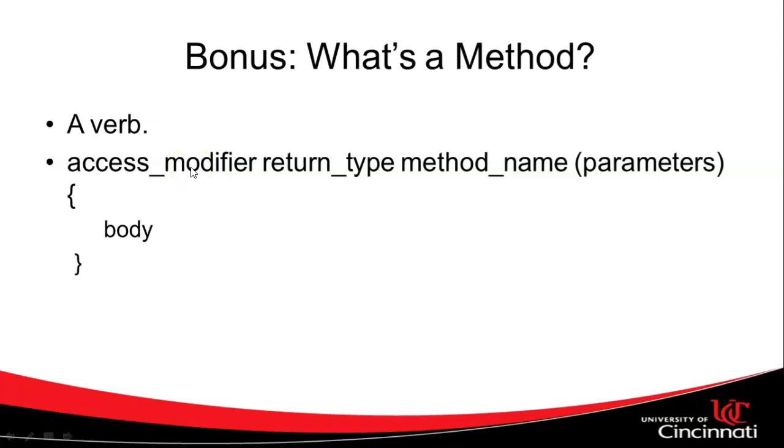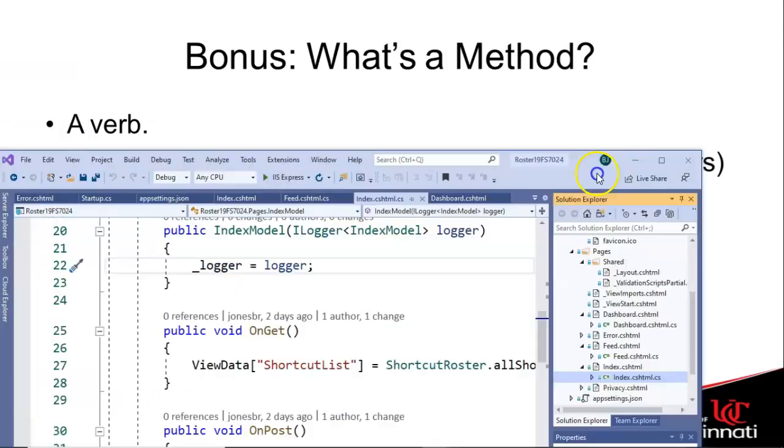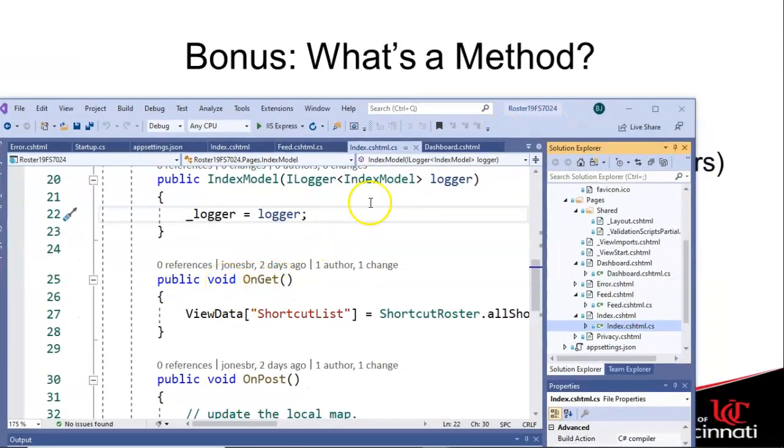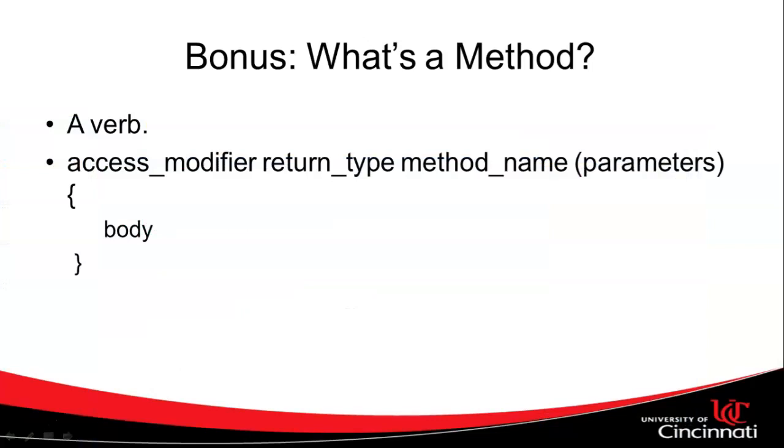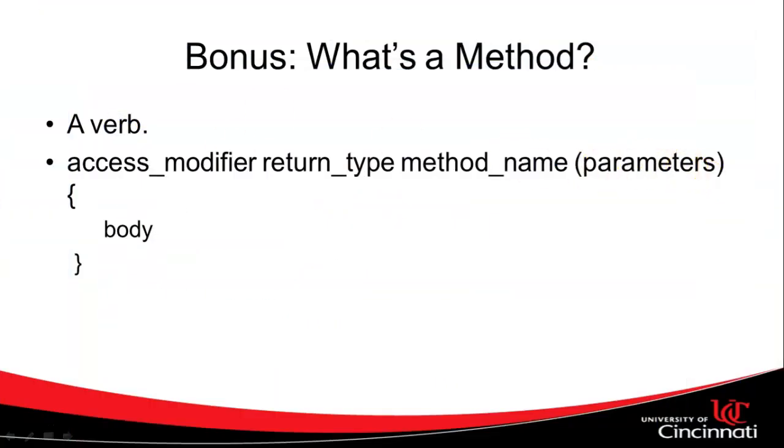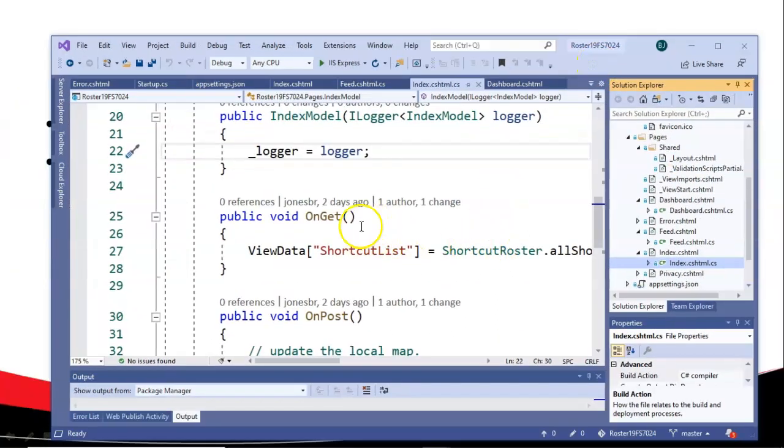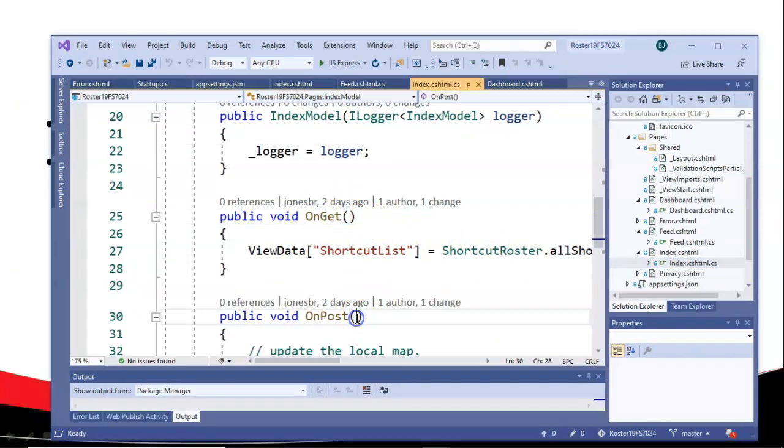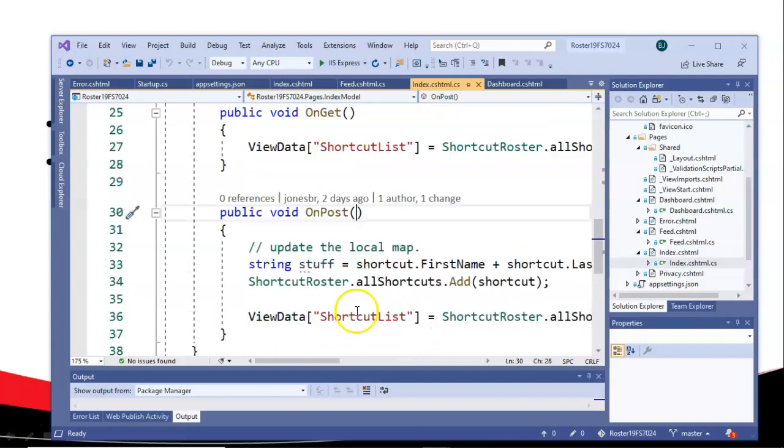Public means they can be called from other classes. Return type void means when the method is done, it's not going to return anything. And so far, that's what we see, we've simply seen void methods. Method name, on get or on post. And then any parameters that are passed in come in parentheses. And you see these have parentheses, but no parameters getting passed in.